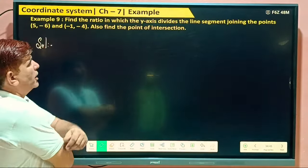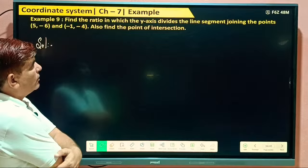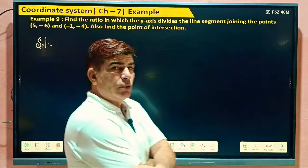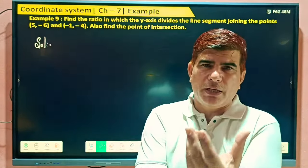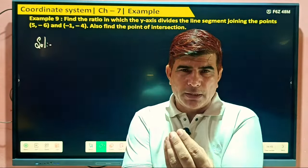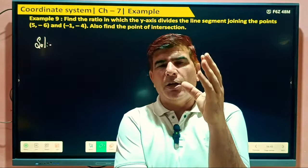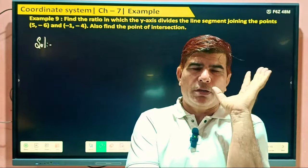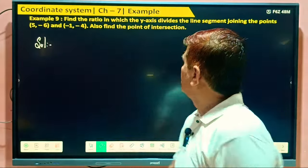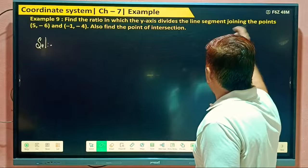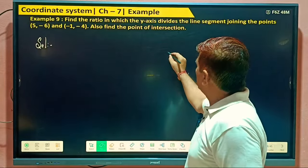Find the ratio in which the y-axis. So return y-axis, return beta here. So when coming y-axis, directly coming in our mind x is 0 here, x coordinate is 0. Divide the line segment, which line segment? This line segment.